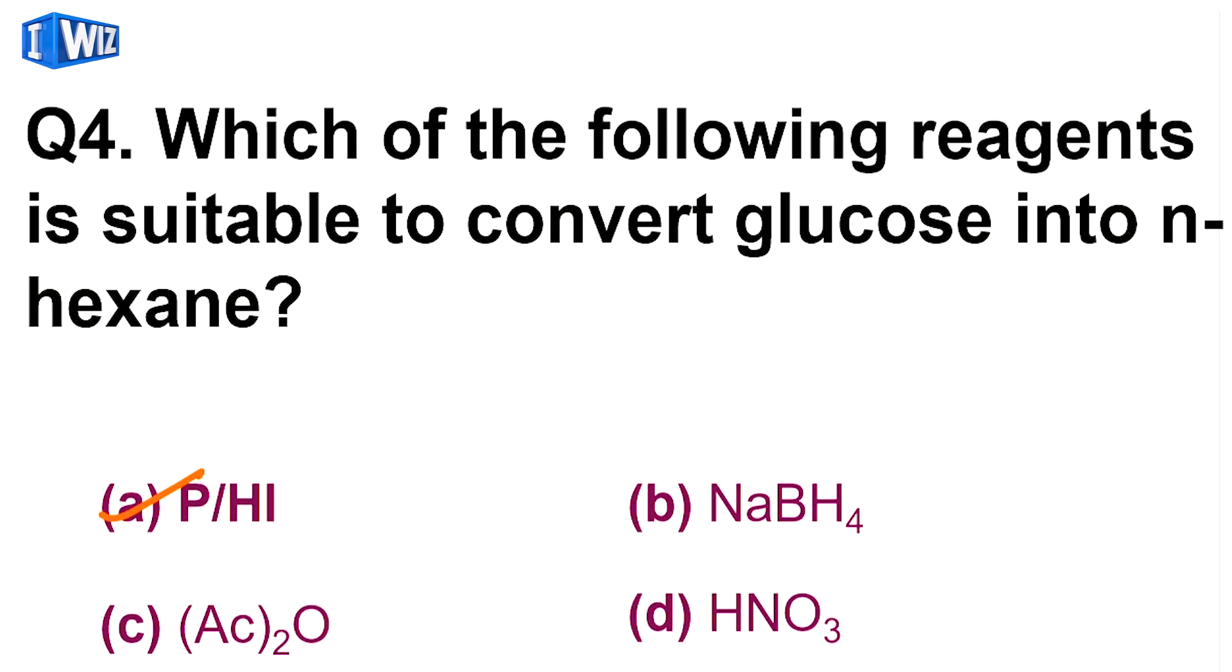Next is, which of the following reagents is suitable to convert glucose into N-hexane? So glucose ko agar aap N-hexane mein convert karna chaathe ho, toh us mein dala jata hai phosphorus in the presence of hydrogen iodide. This hydrogen iodide converts glucose into six carbon long chain, which means glucose's six carbons are not branched, they are present in a single long chain.